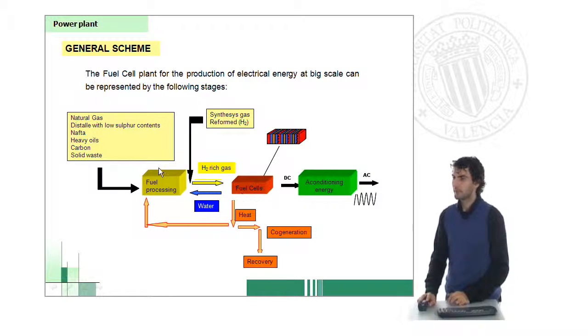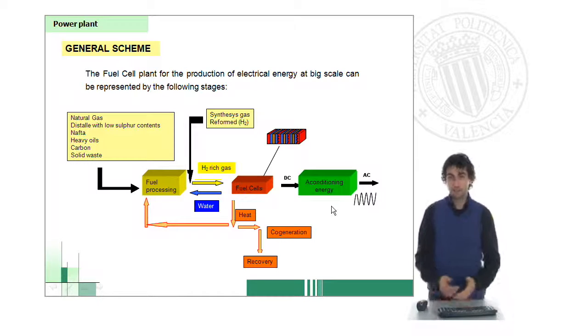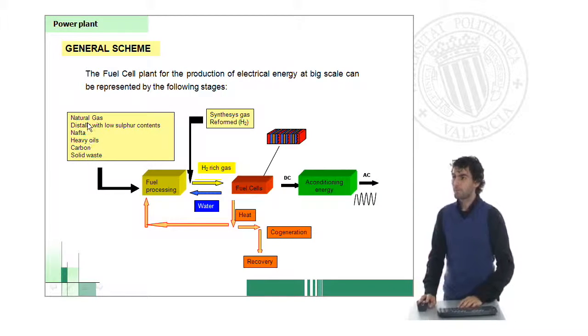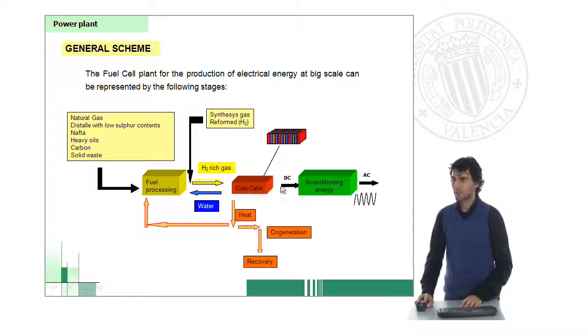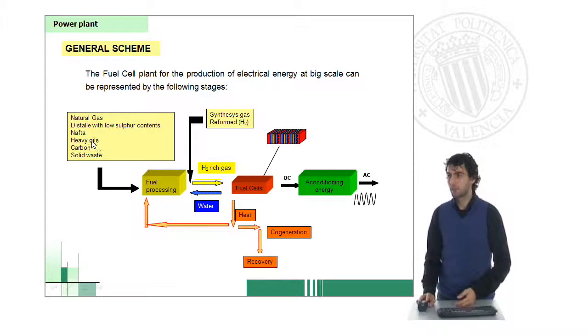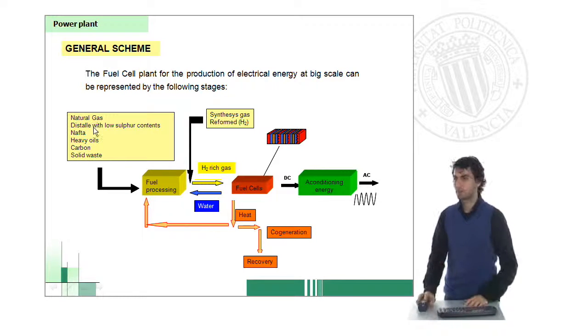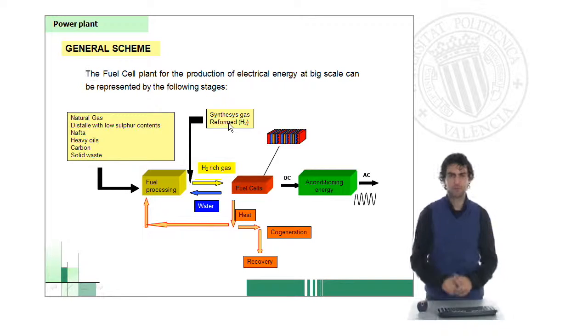If you see here, there are some fuel processing operations previous to fuel cells and some other energy conditioning operations posterior. In general terms, we can use a lot of different fuels for supplying energy to fuel cells. We can talk about natural gas, nafta—especially natural gas is very common in this high scale operation—or even hydrogen, if we do have hydrogen, which is not very easy.